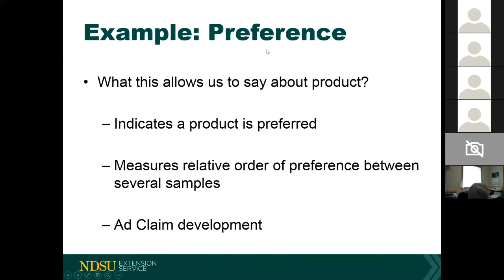At the end of a preference study, you can say this product is preferred over another — but it doesn't tell you if they actually like it. In a ranking test, you get a relative order of preference but no quantification, giving you qualitative rather than truly quantitative data. Done properly with a third party, preference testing can support an advertising claim.